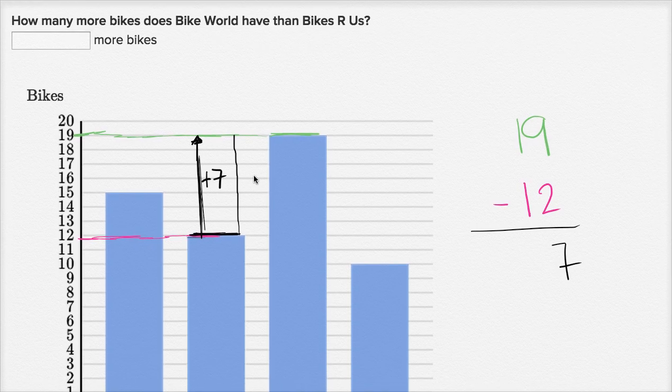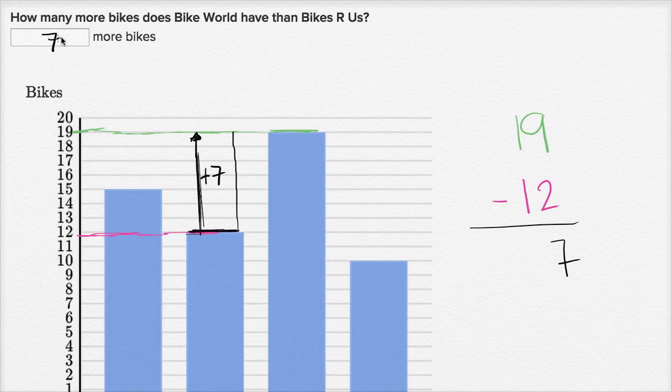So how many more bikes does Bike World have than Bikes Are Us? It has seven more bikes.